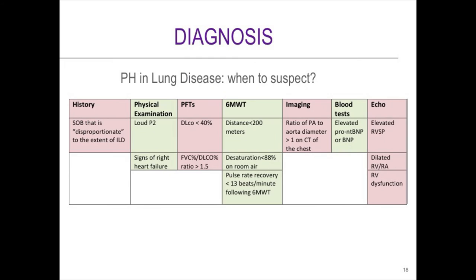When should we suspect pulmonary hypertension in interstitial lung disease? Many steps can raise your level of suspicion. Certainly history — shortness of breath that appears disproportionate to the underlying parenchymal lung disease. Always listen for a loud P2. The lower the DLCO, the more likely there is a component of pulmonary hypertension. From the scleroderma literature, you can look at the FVC to DLCO ratio as an indicator of increased vascular involvement. Look at the six-minute walk — desaturation, distance, and pulse rate recovery, which has been shown to correlate with pulmonary hypertension and to perhaps be the best predictor of outcomes in patients with IPF. You look at the pulse rate at the end of the six-minute walk, say 120, wait one minute into recovery — if it's 100, your pulse rate recovery is 20. The lower the pulse rate recovery, the worse the prognosis.